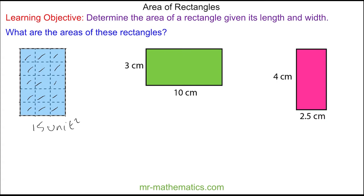We can progress from counting by multiplying, because we know we have 3 on the length and 5 along the width. We can write this as a multiplication: 3 units multiplied by 5 units. 3 times 5 is 15, and units multiplied by units is units squared.